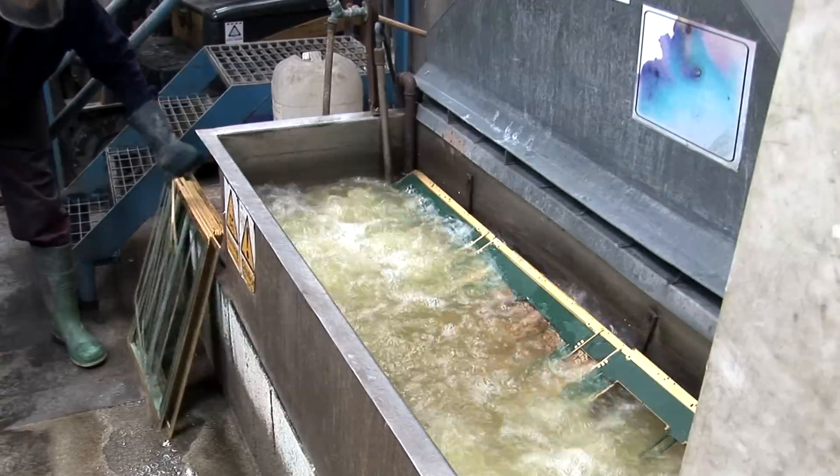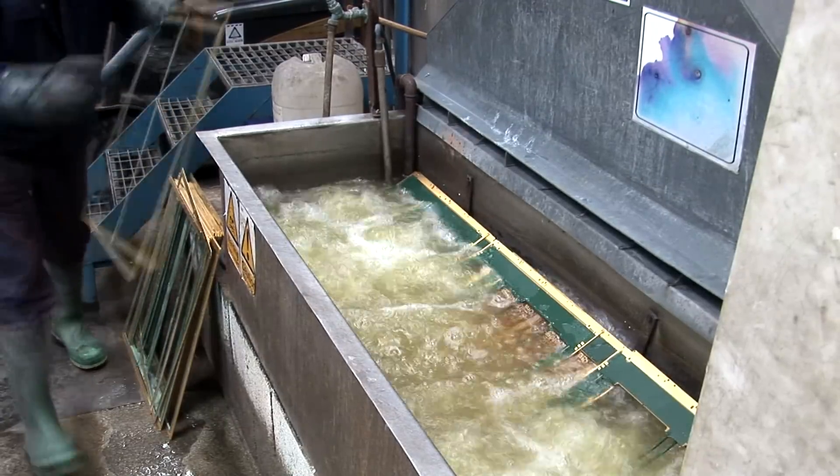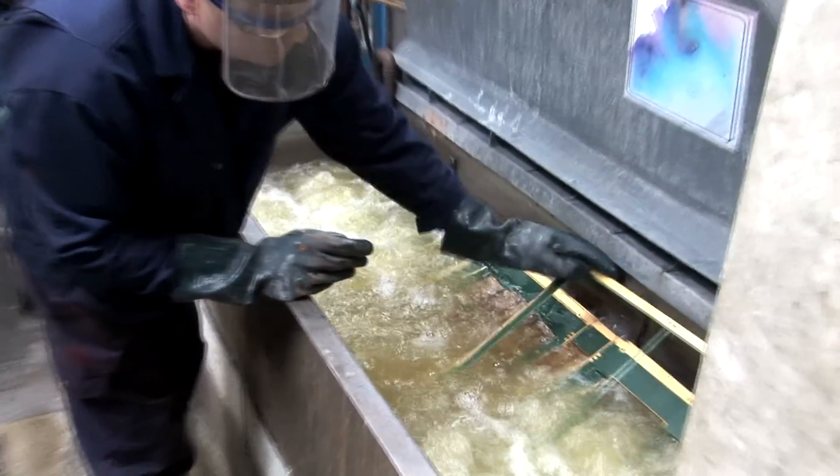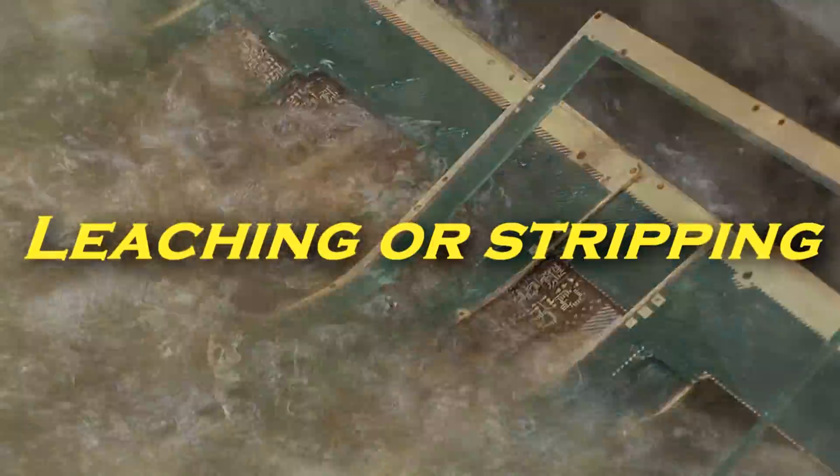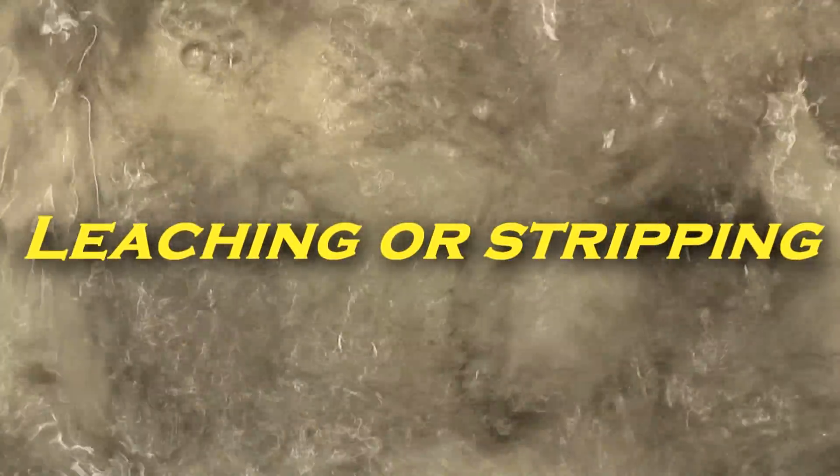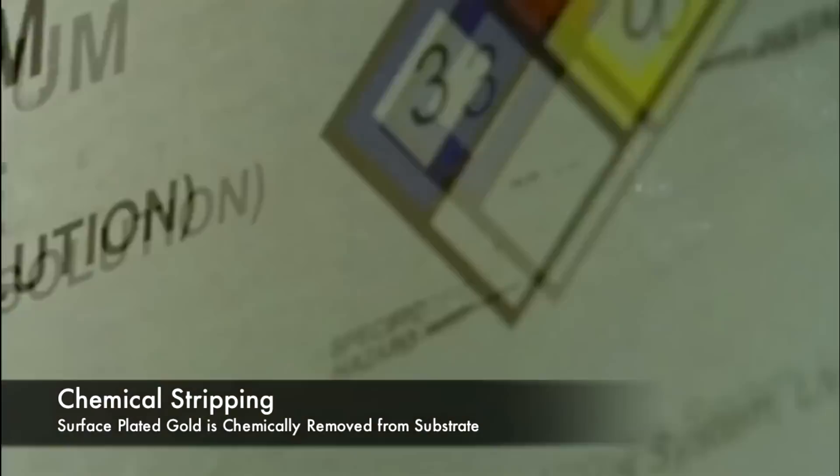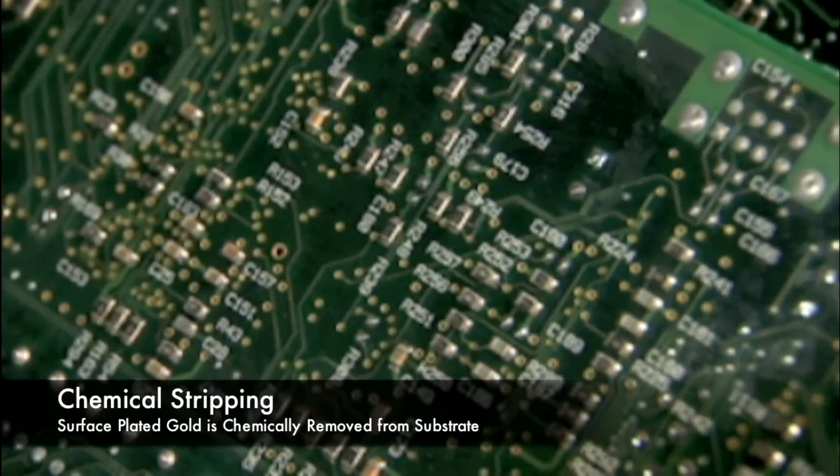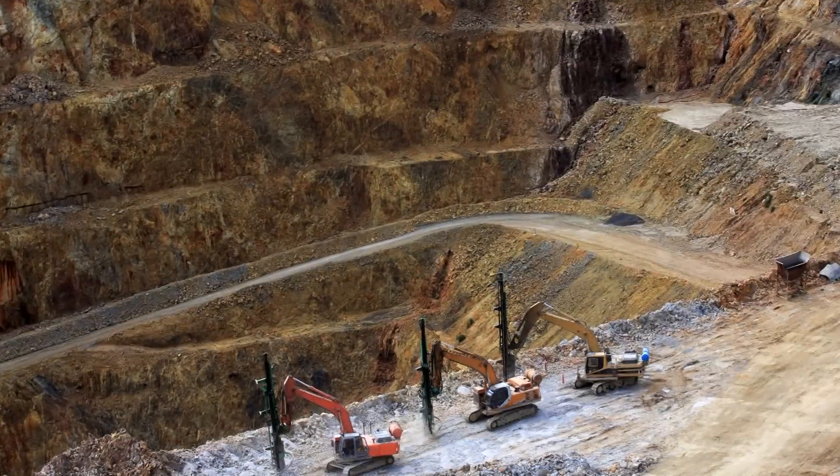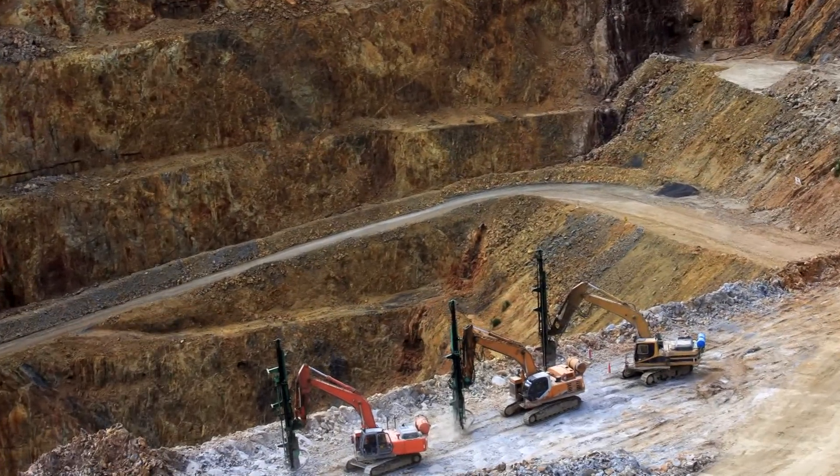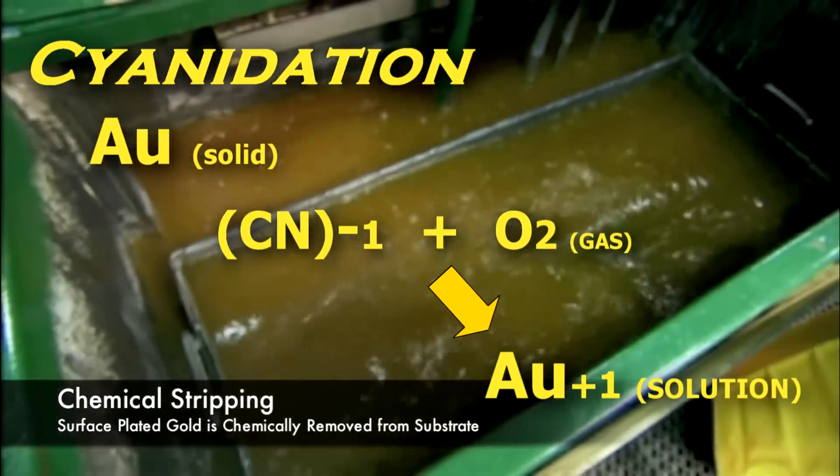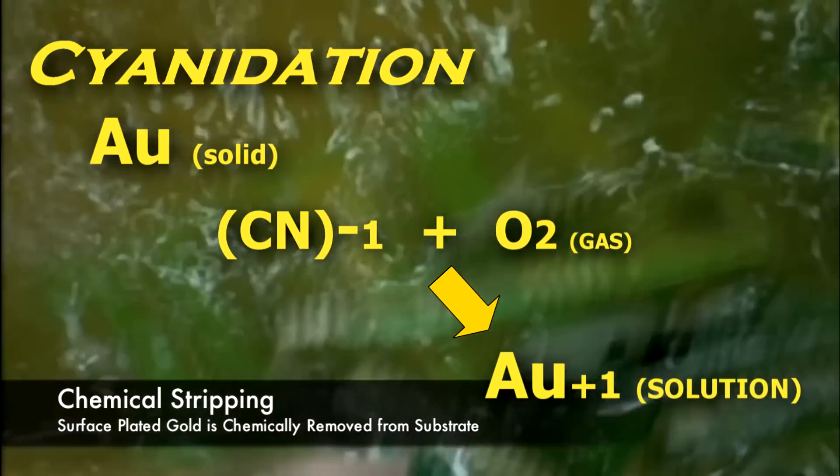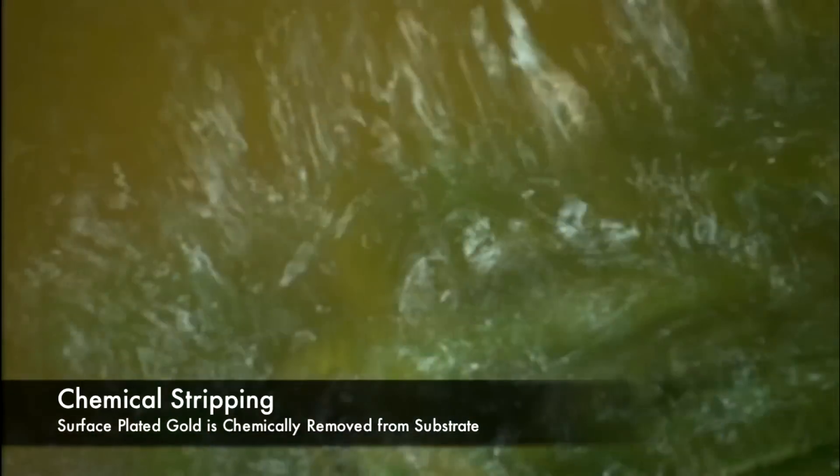The hydrometallurgy part one video introduced the various leaching processes as the first step in precious metals extraction. Leaching is the dissolution of metals for the eventual solution concentration and purification steps. These refining processes can be used for precious metals extracted from primary or mining sources, as well as secondary sources of industrial or recycled scrap materials.